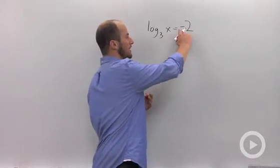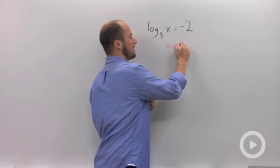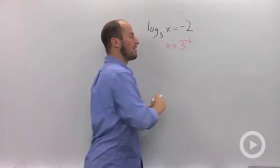So this one, the three is going to come up and around, leaving us with x is equal to 3 to the negative 2.